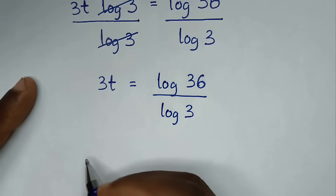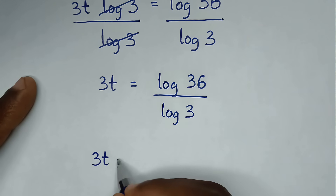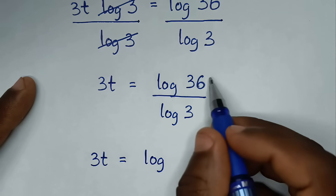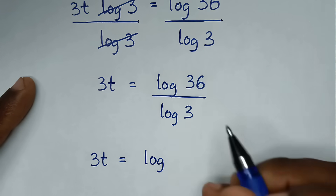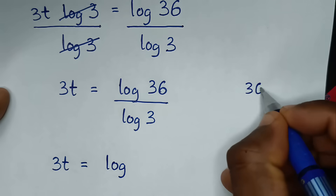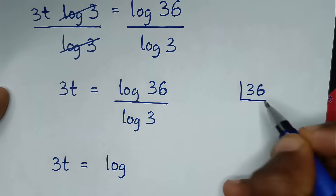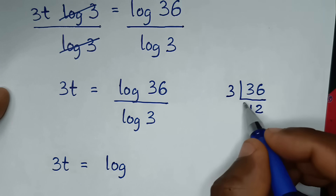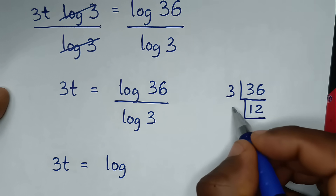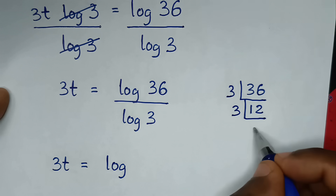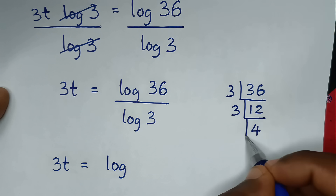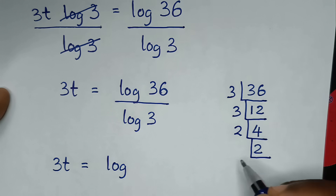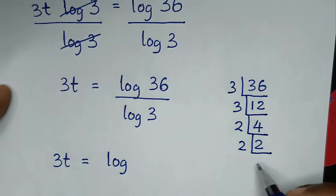Then in the next step, it will be 3t is equal to log of 36 over log of 3. Let's find the prime factors of 36. From 36, it is divisible by 3, giving 12. Then 12 is also divisible by 3, giving 4. Then divide by 2: 4 divided by 2 is 2. Then divide by 2 again: 2 divided by 2 is 1.